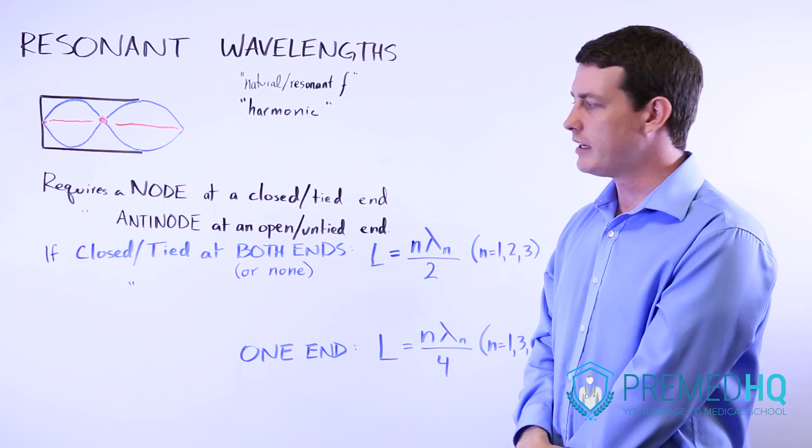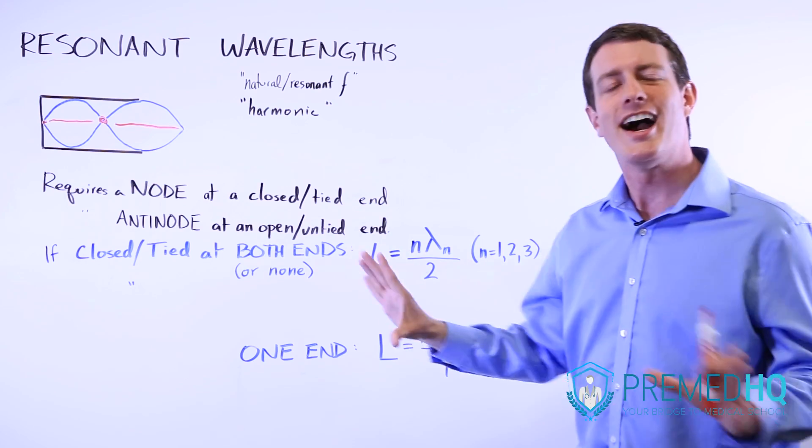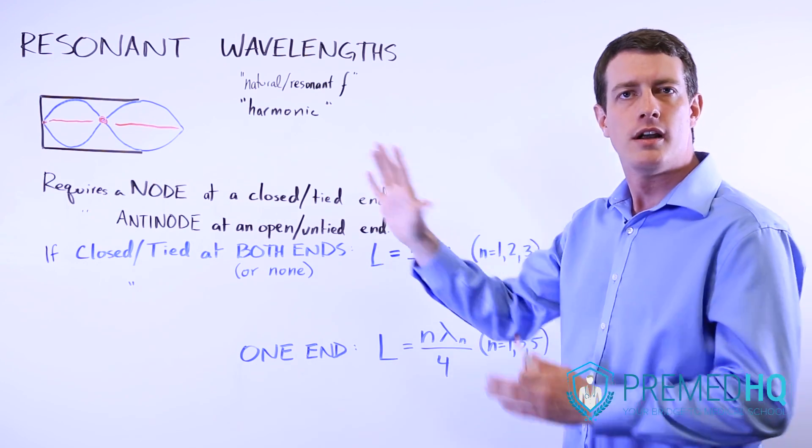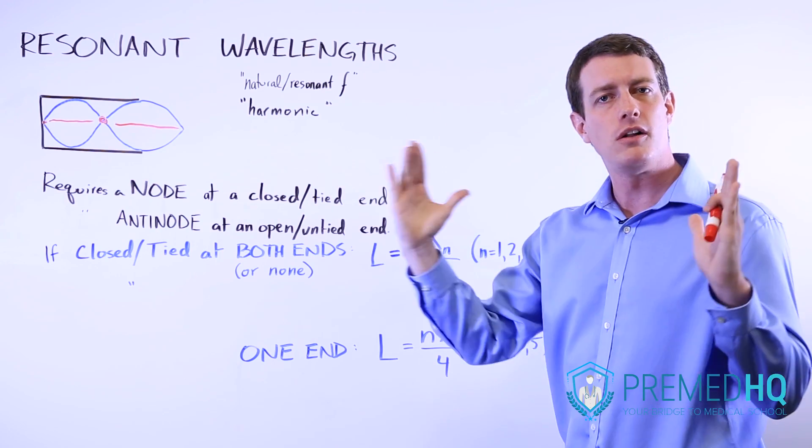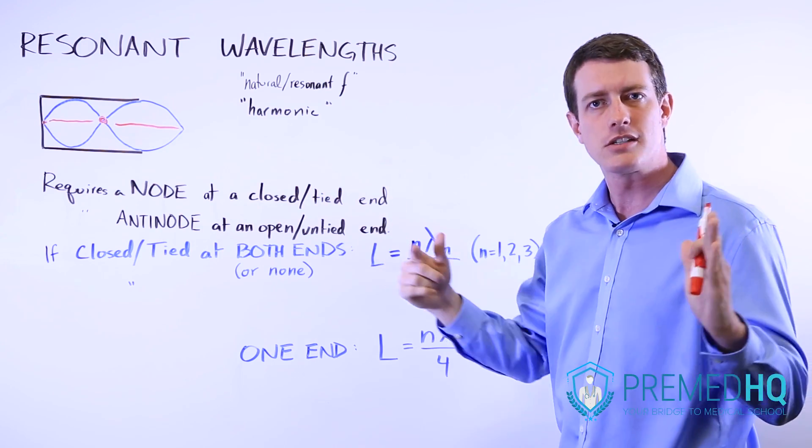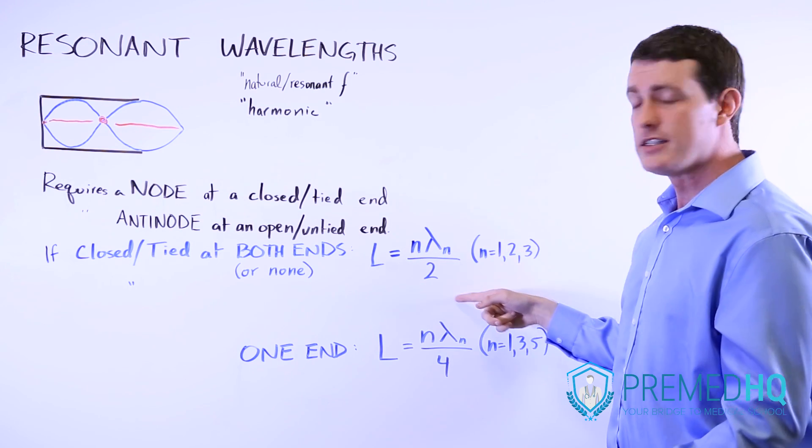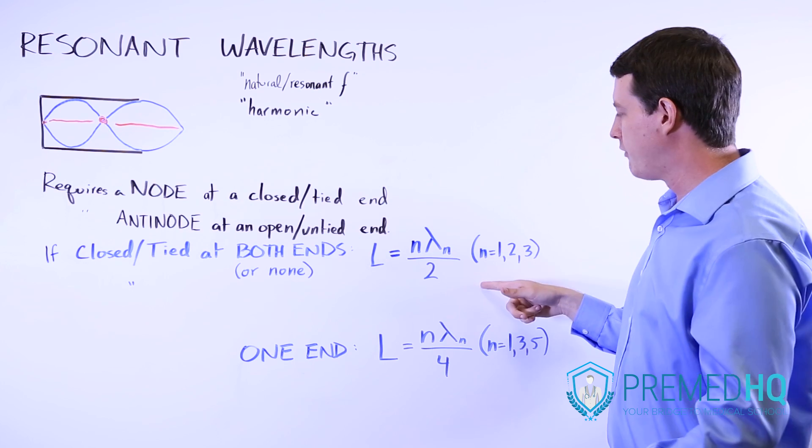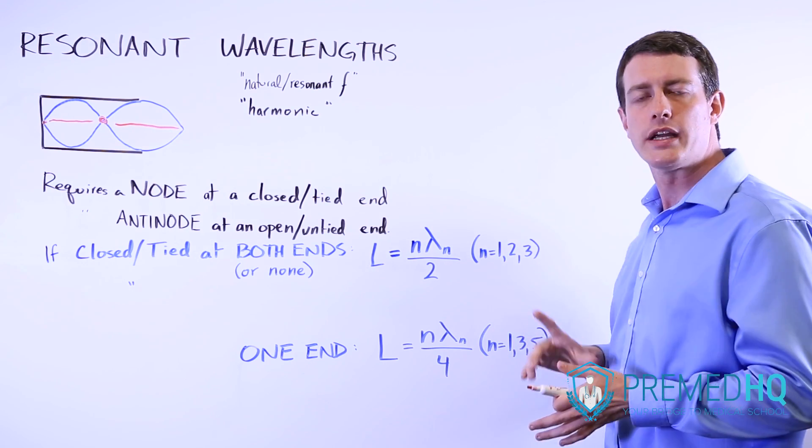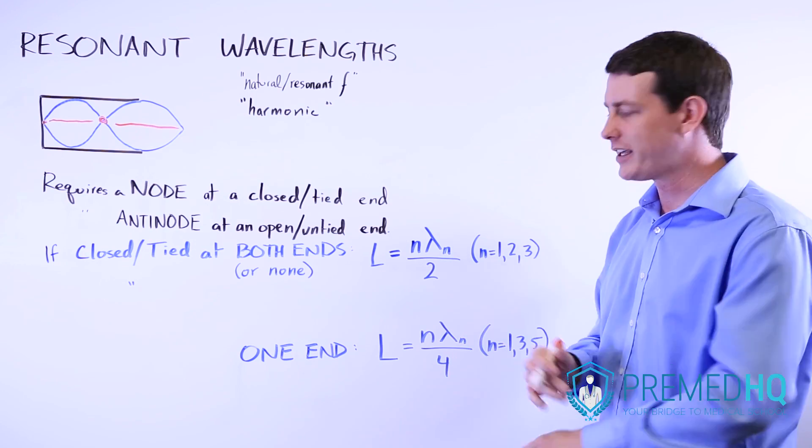And the calculations that you use, if it is closed or tied at both ends or neither end, then you use the formula that the length of the pipe or the length of the overall waveform, for example the length of the distance between the two ends of the guitar string, is equal to n times lambda sub n divided by 2. And for this you use n with any value, any integer, 1, 2, or 3, and that will give you all of the various harmonic wavelengths that you'll encounter with that.